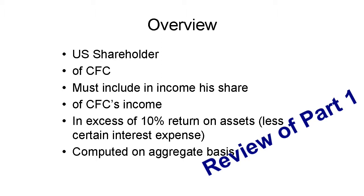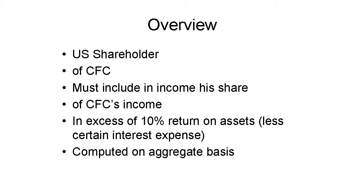Such a shareholder must include in his income every year after 2017 his share of the aggregate income of all his CFCs in excess of 10% aggregate return on assets of his CFCs. This inclusion is in addition to subpart F inclusions. Initial calculations of income and 10% amounts are done at the CFC level and exclude subpart F income, then allocated among shareholders based on profit-sharing percentages.